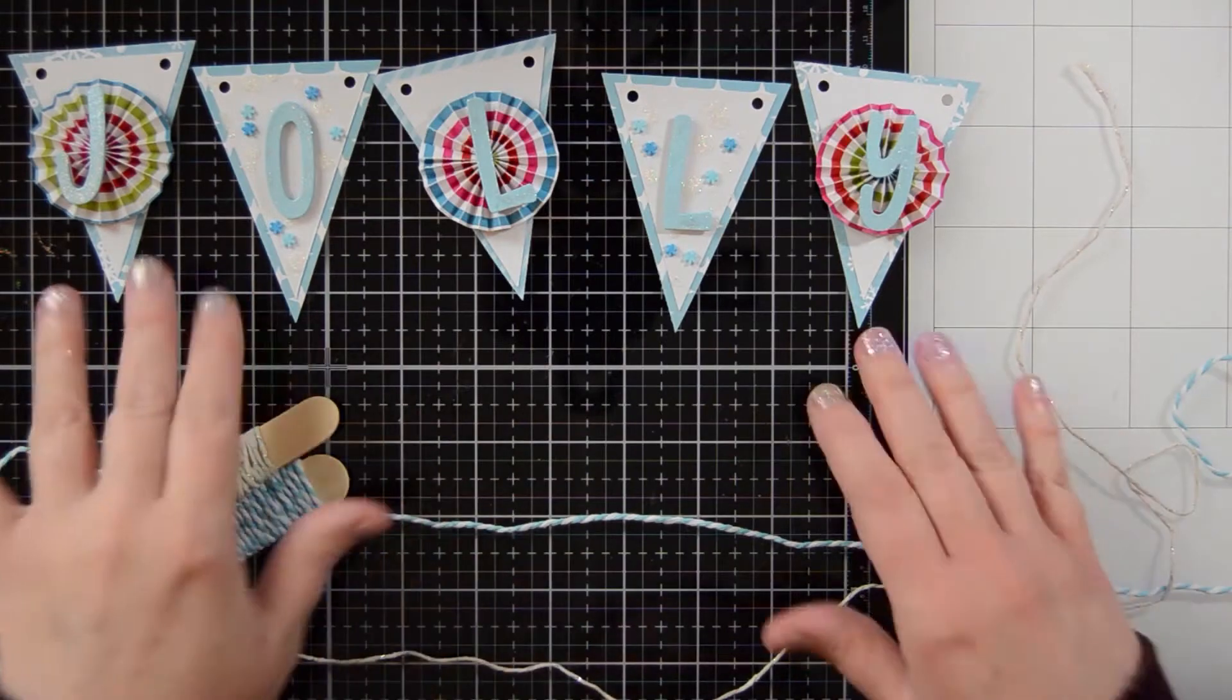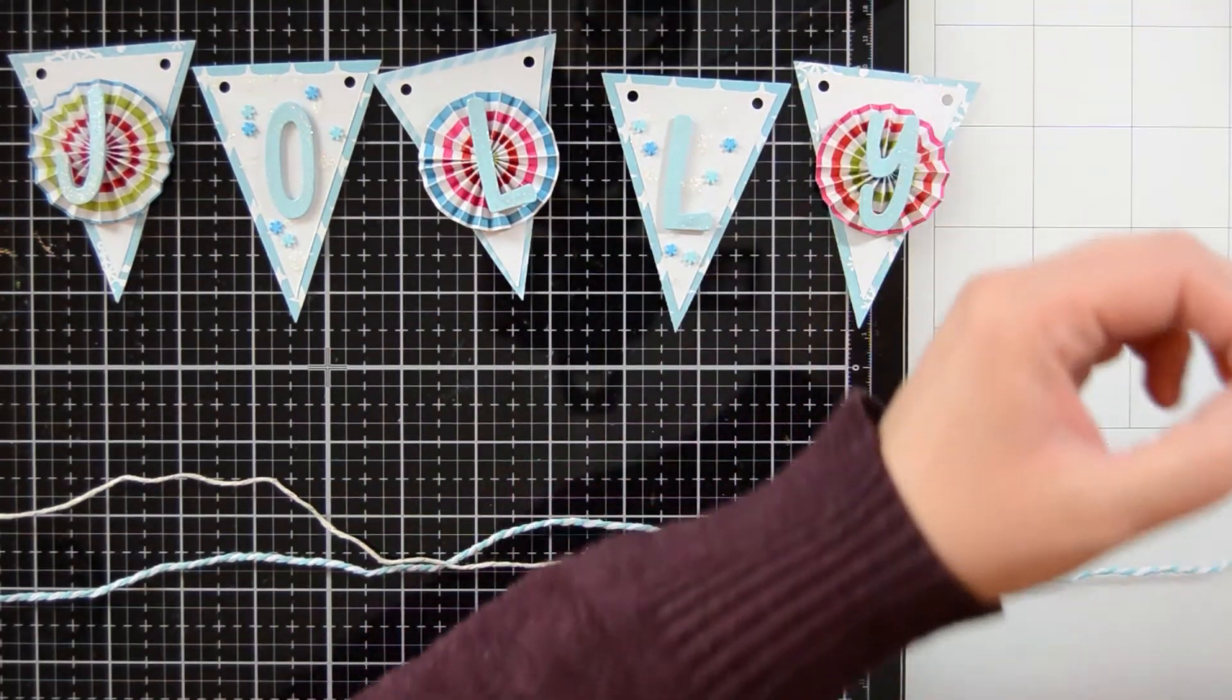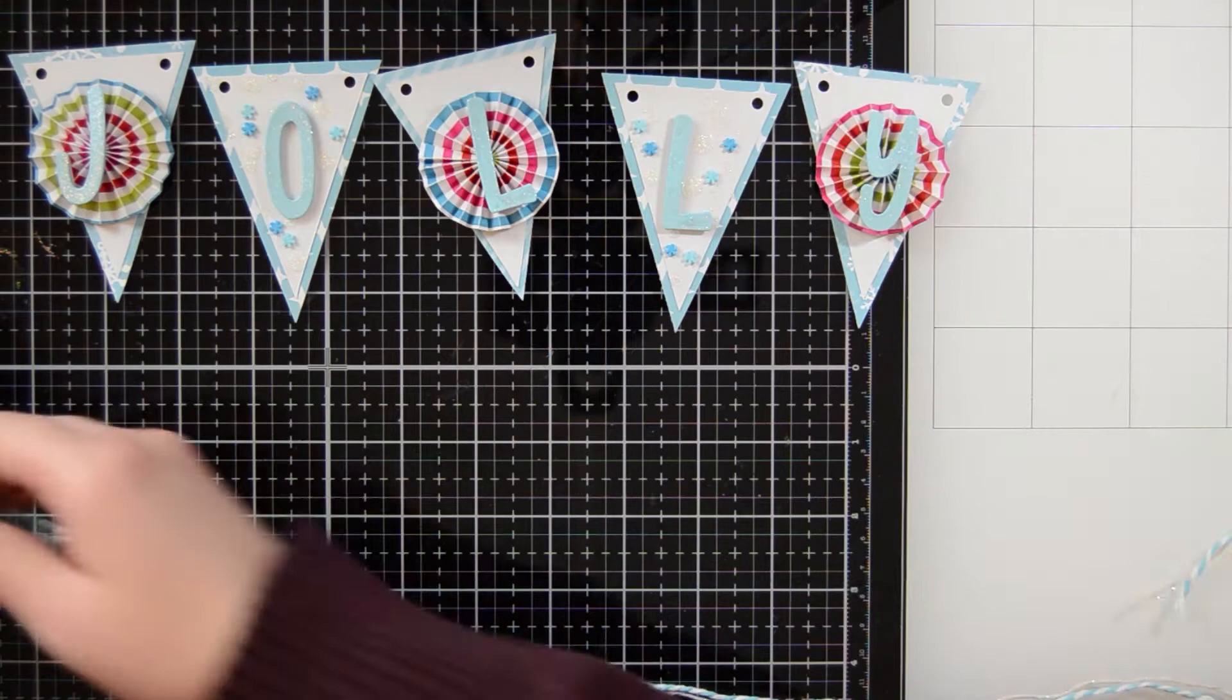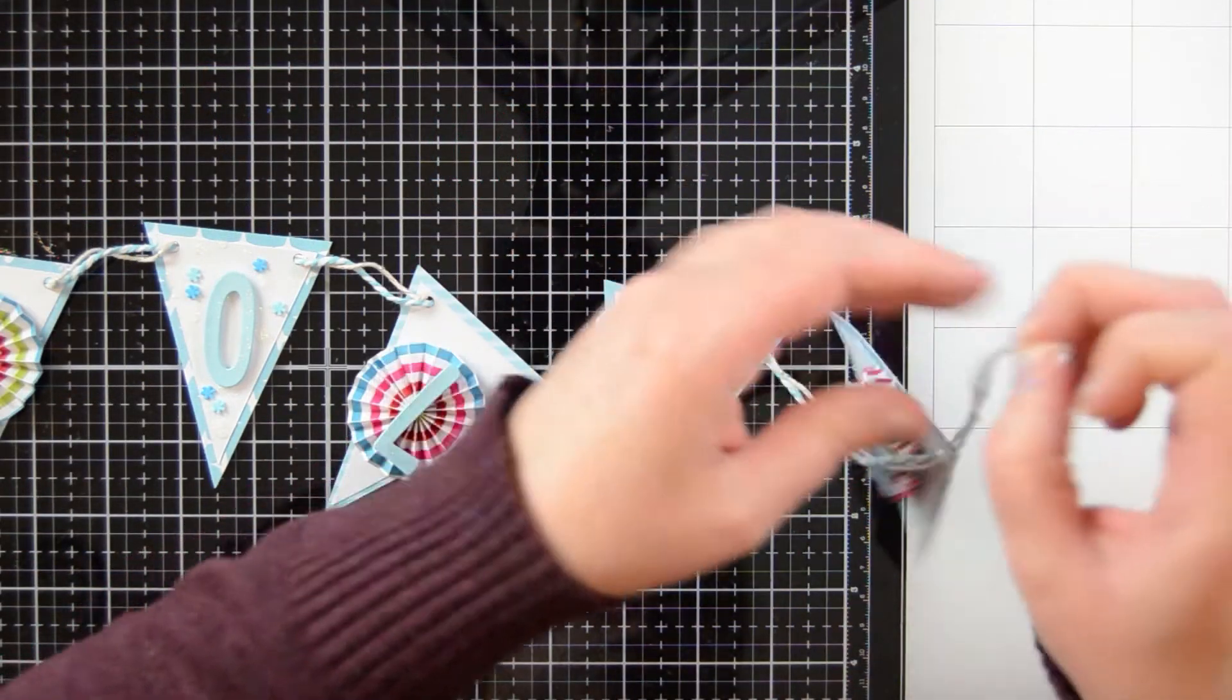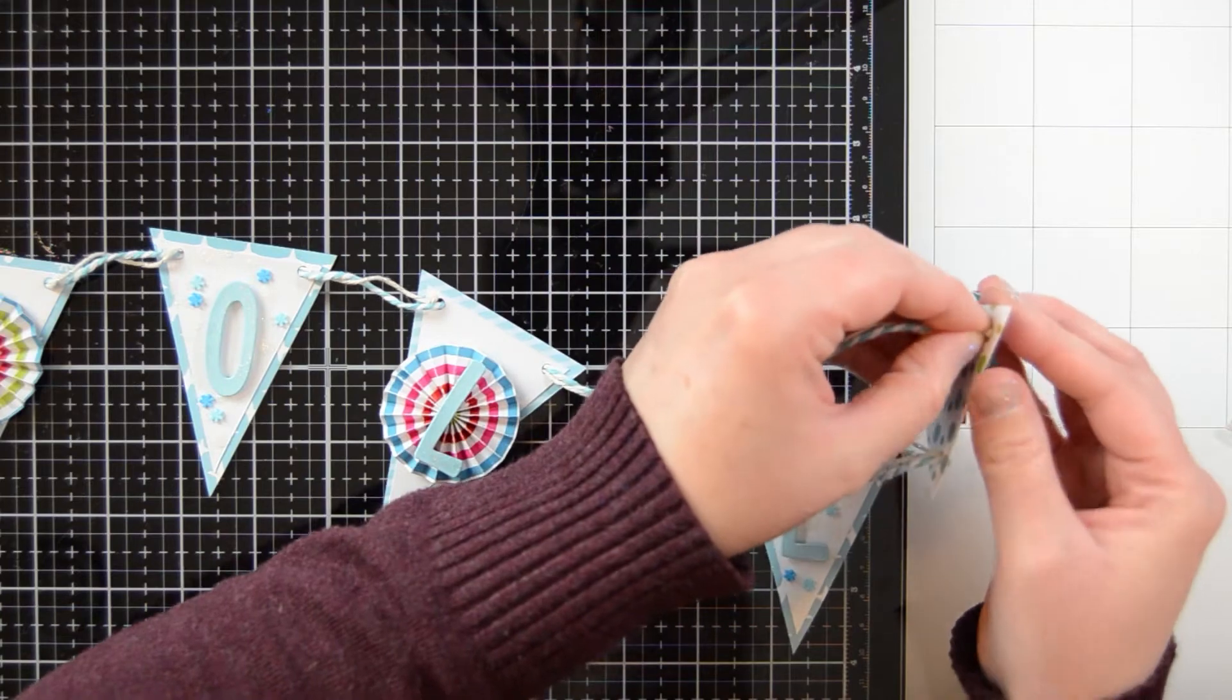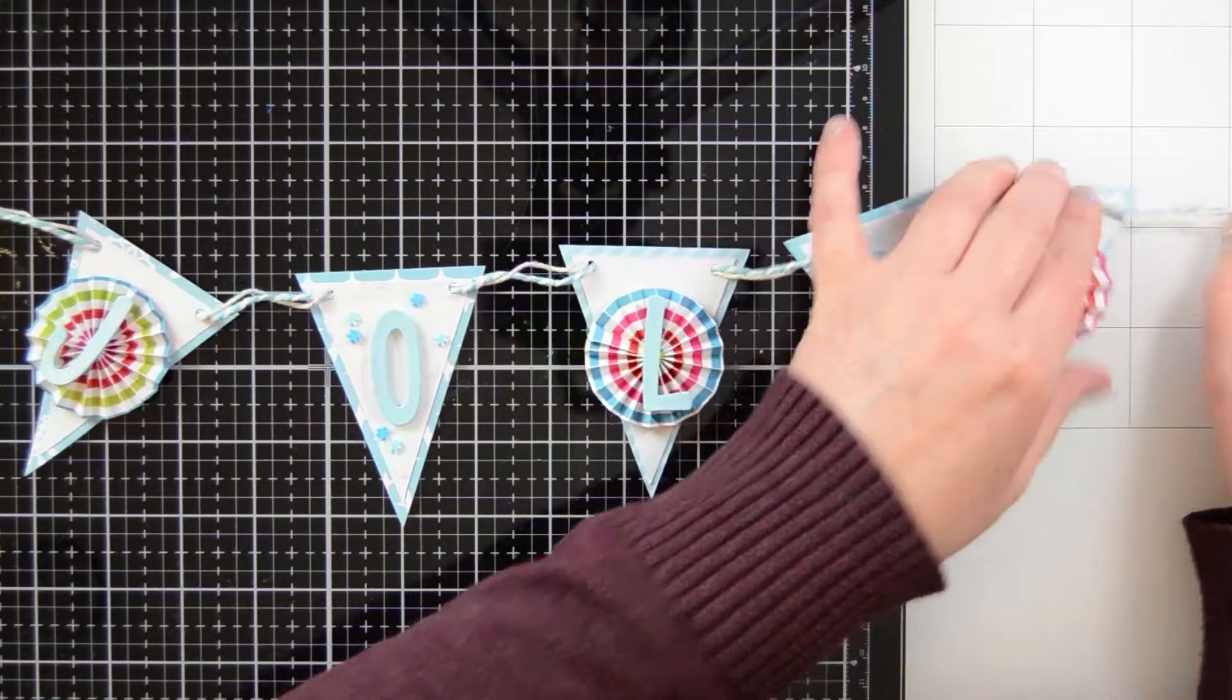All right, so here is the banner all finished up. So next I'm going to take some of this baker's twine. I wanted to combine two different kinds. The one is kind of white and has silver string running through it. And then the other one is just white and blue, a blue that matches really well with these papers. So I'm stringing it through and you can see how I'm going from the front to the back and then back through to the front. So the string doesn't cross the front of the banner.